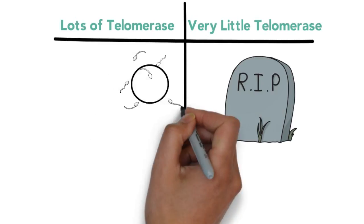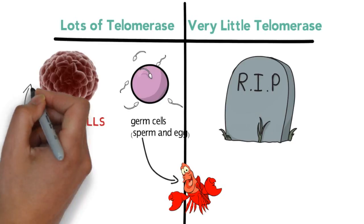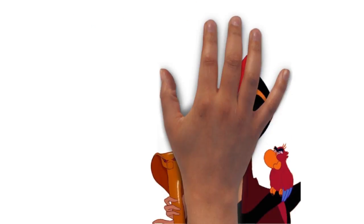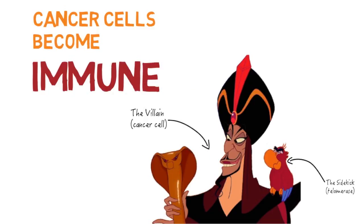What has a lot? Germ cells. Sperm and egg. Lobsters have a lot of germ cells, which is why they can technically live really long. And the scary part is that cancer cells have a lot of telomerase as well. That means, like a psychic to a villain, telomerase can help cancer cells extend their telomeres so they become immune.